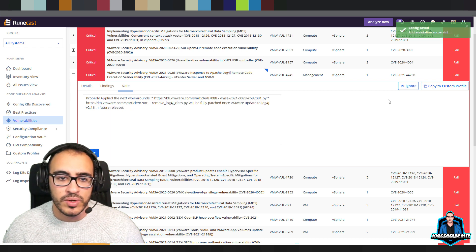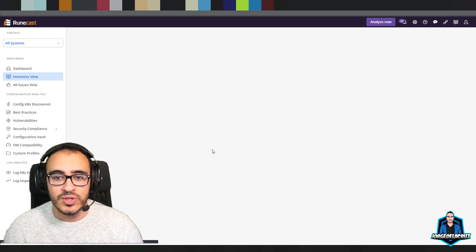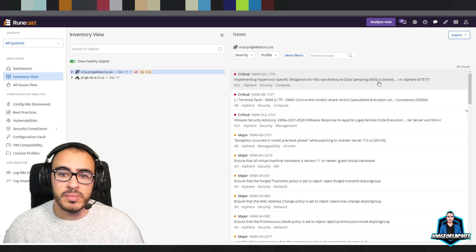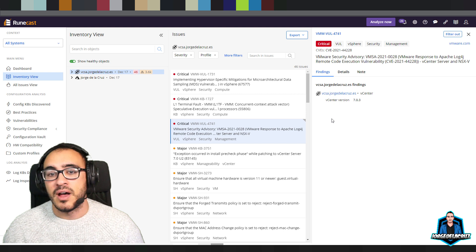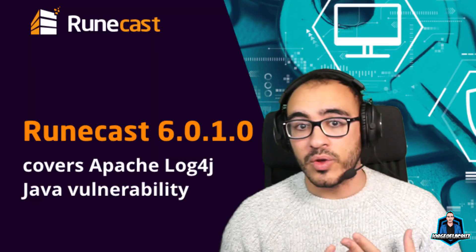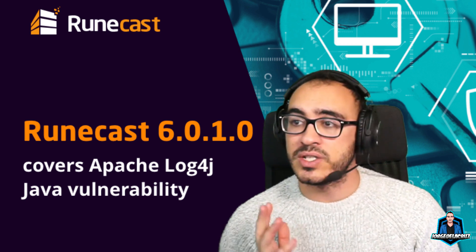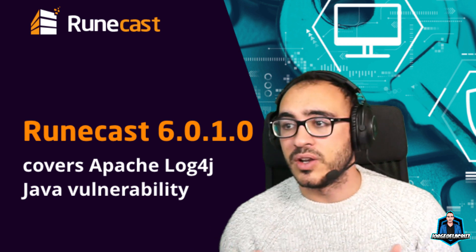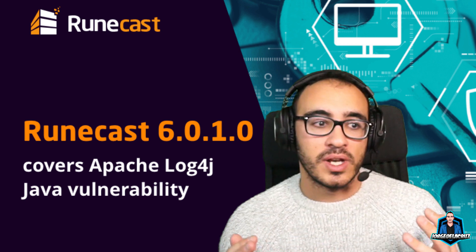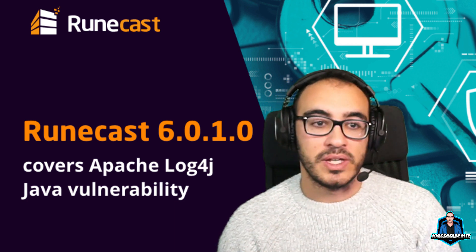If you go to the Inventory view and expand your tree, you'll see your vCenter or vCenters and can add notes there too. Runcast doesn't yet check for the workarounds, but hopefully in the future it will either check that the Java classes have been properly patched, or — once VMware releases the minor update with Log4j version 2.16 — Runcast will automatically check if you're on the newest version and remove that vulnerability from your list.